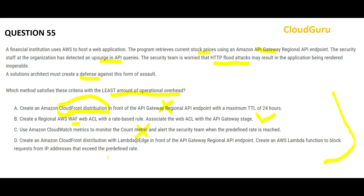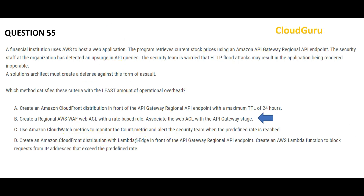Option C is wrong because it is a reactive solution, not a proactive one — it's like telling a security guard that thieves have entered the complex, but it does not actually prevent the thief from entering. Option D is wrong as well because it asks you to go through CloudFront distribution, and for web applications that are only trying to get the latest data, caching won't help. This use case requires a security solution, not a caching solution. The final answer is B.